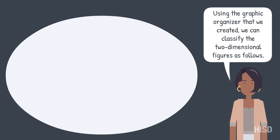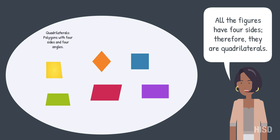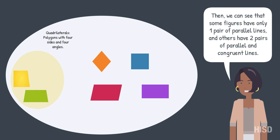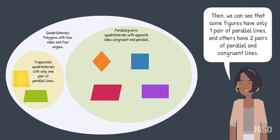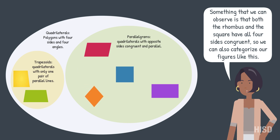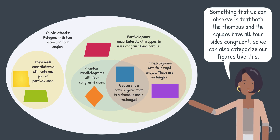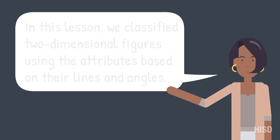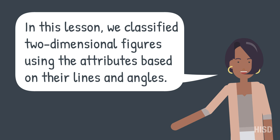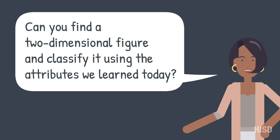Using the graphic organizer we created, we can classify the two-dimensional figures as follows. All the figures have four sides, therefore they are quadrilaterals. Some figures have only one pair of parallel lines and others have two pairs of parallel and congruent lines — these are the parallelograms. Parallelograms can further be classified into figures with or without four right angles. We can also observe that both the rhombus and the square have all four sides congruent. In this lesson, we classified two-dimensional figures using attributes based on their lines and angles. Can you find a two-dimensional figure and classify it using the attributes we learned today?